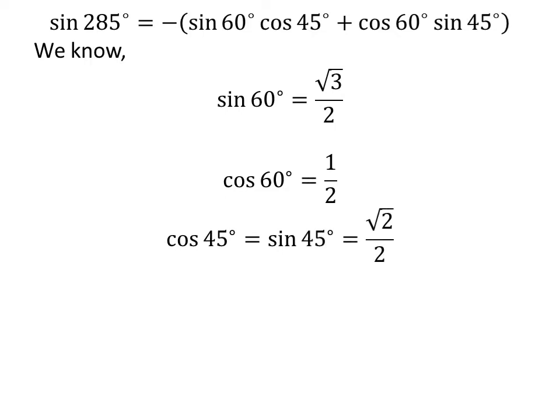As we know, sine of 60 degrees is equal to square root of 3 over 2, cosine of 60 degrees is equal to 1/2, and cosine of 45 degrees equals sine of 45 degrees equals square root of 2 over 2. So we plug in these values in the above equation.